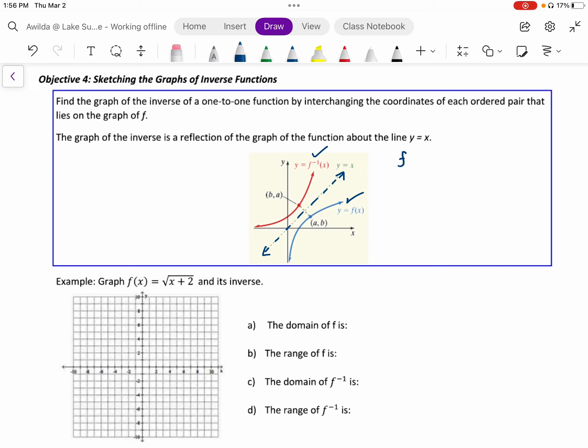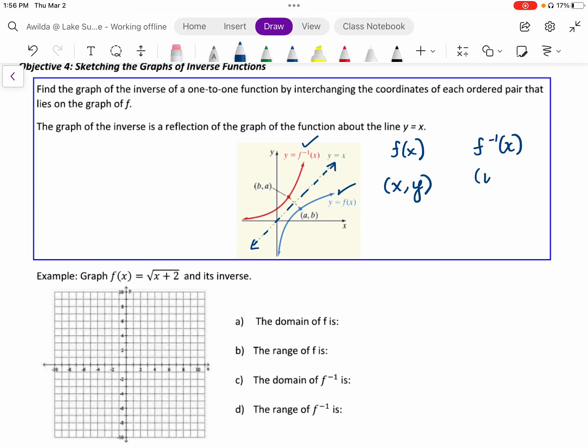For the original function, all those x, y pairs will be reflected across that line to create its inverse graph by basically swapping the x and the y coordinates. You see that here. The ordered pair in the original graph of f becomes the ordered pair in the graph of its inverse.